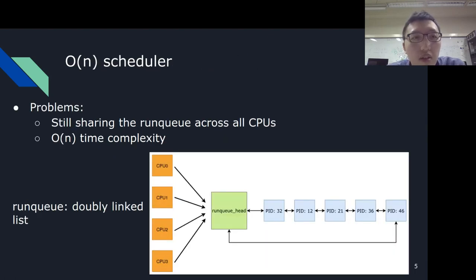Therefore, the O(N) scheduler was born. It is mainly to solve the task amount limitation problem. Still, the scheduler has to traverse the whole run queue to find the most suitable task to execute, making the scheduler bloated when there are many tasks present in the system. Besides, the run queue is still shared across all CPUs.